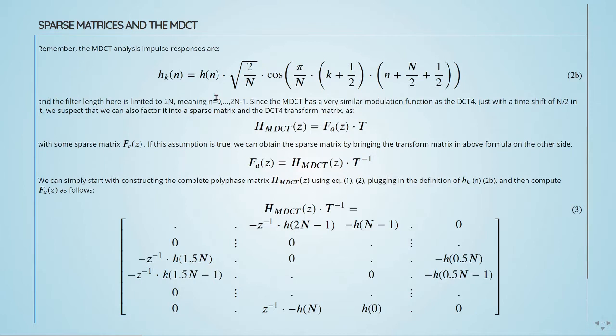We suspect that we can also factor it into a sparse matrix and a DCT transformed matrix. There's some sparse matrix FA of Z. If this assumption is true, we can obtain the sparse matrix by bringing the transformed matrix from the above formula to the other side of the equation.